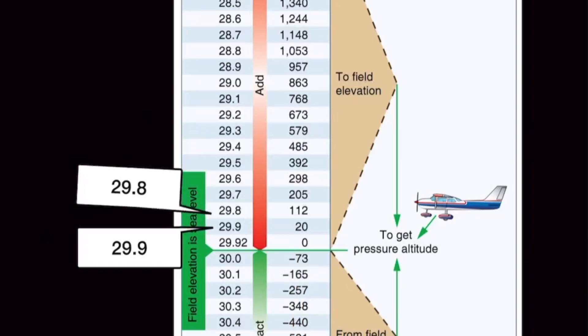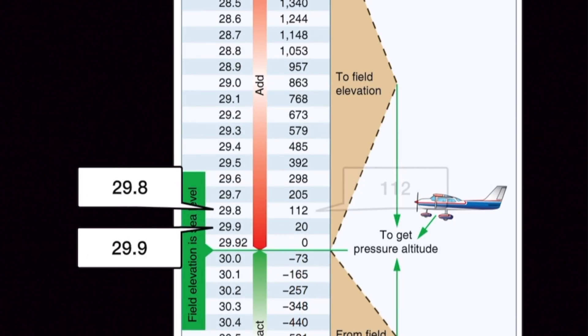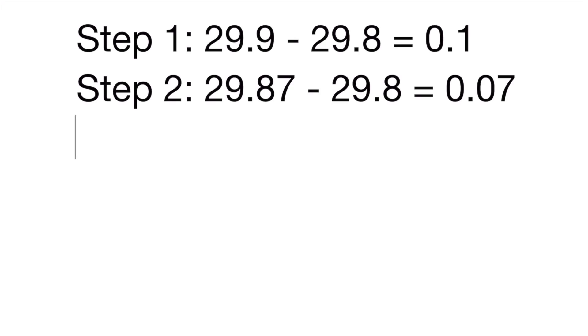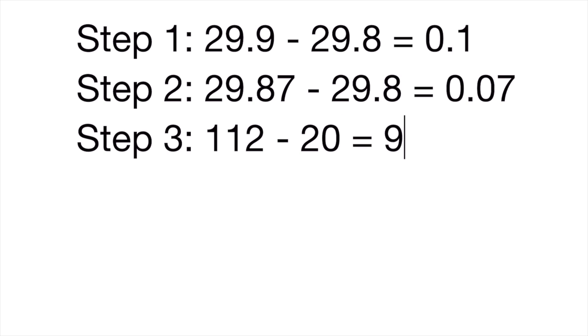In this instance, 29.8 has a resulting value of 112, and 29.9's resulting value is 20. Subtracting these two leaves 92.